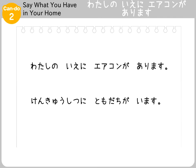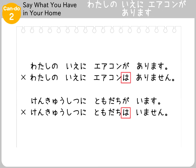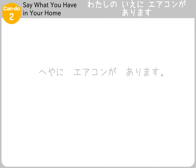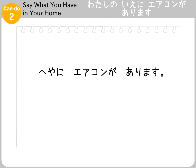When using the negative form, you will use the particle は. For example: は ありません, or は いません. For a question, you will ask は ありますか, or は いますか.